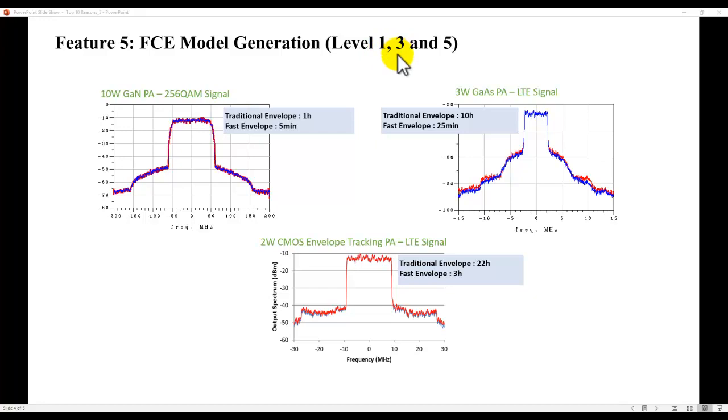Level one works very nicely with narrow bandwidth signal. Level three is for wide band and normal non-linear based circuit. Level five is for wide band and highly non-linear circuit extraction. Using the right model, you can get desired amount of accuracy as well as benefit from faster simulation speed.